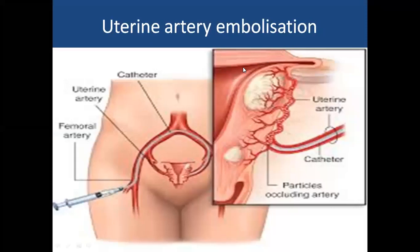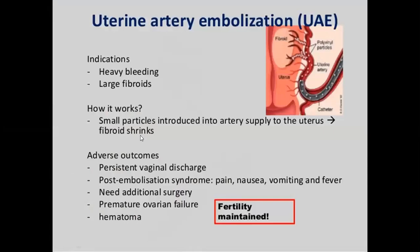Another conservative management for AUB is uterine artery embolization. Polyvinyl alcohol particles are introduced into the uterine artery to reduce blood supply to the uterus, causing shrinking of fibroids and relief of AUB symptoms. Indications are heavy bleeding and large fibroids. Adverse effects include persistent vaginal discharge, post-embolization syndrome (pain, nausea, vomiting, fever for three to four weeks), need for additional surgery, premature ovarian failure, and hematoma formation.